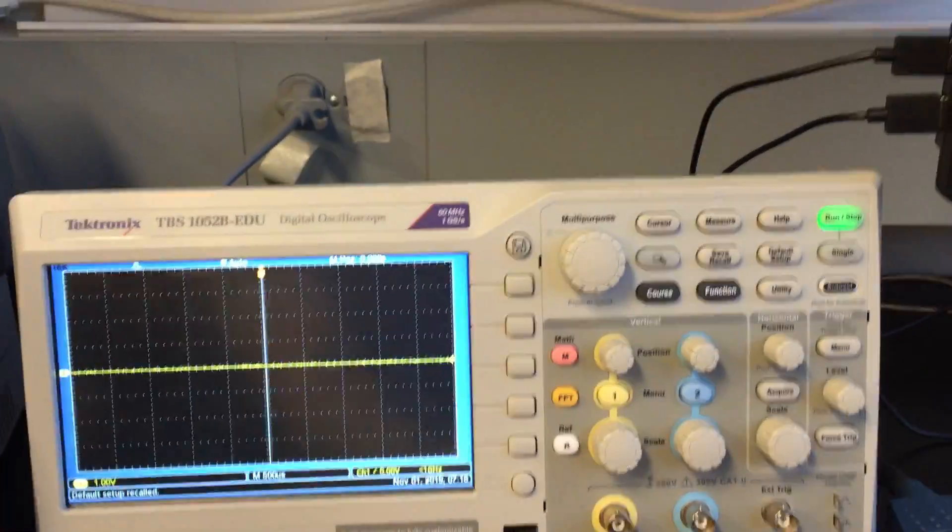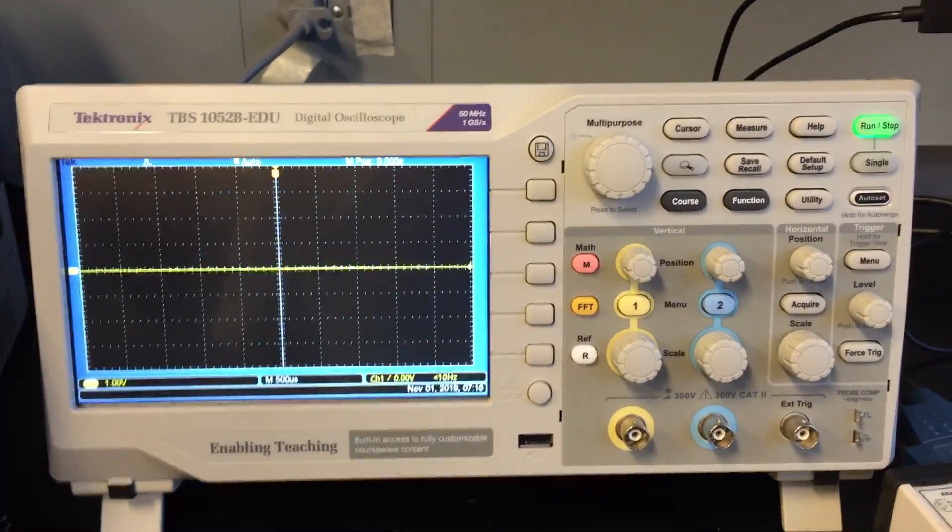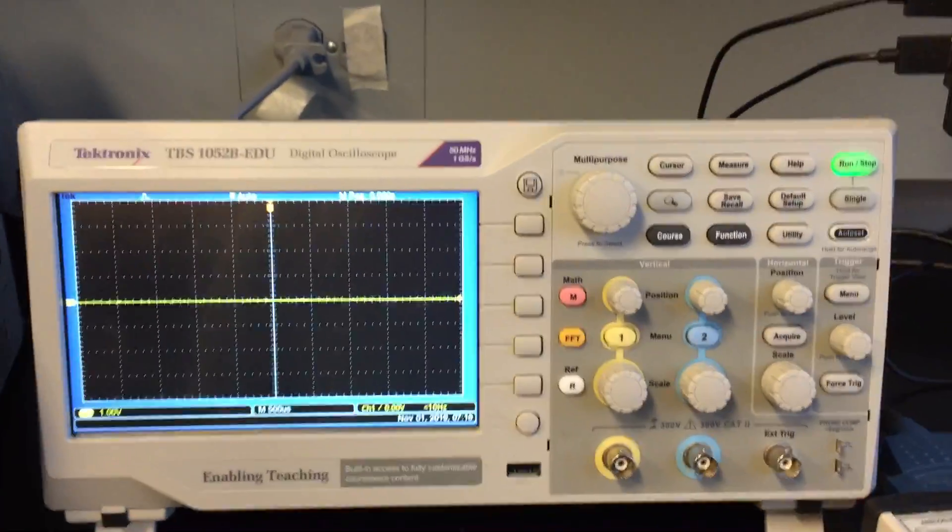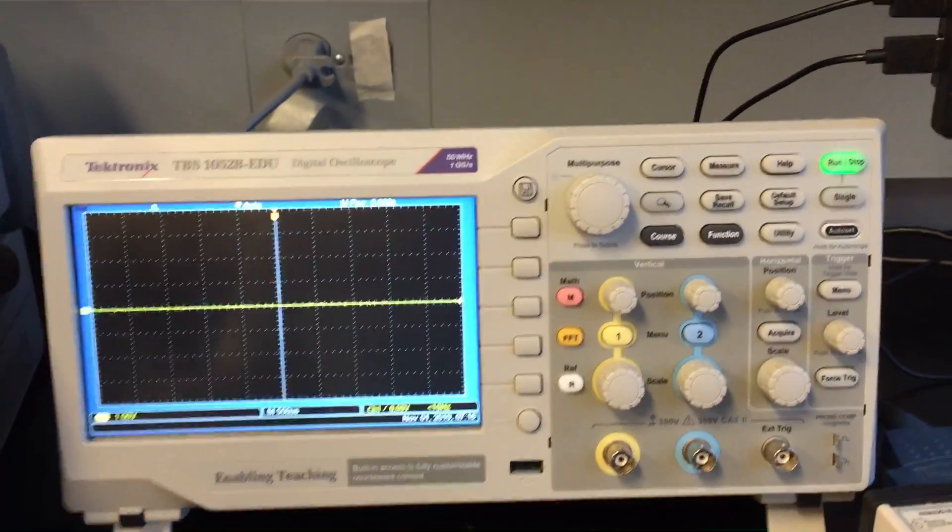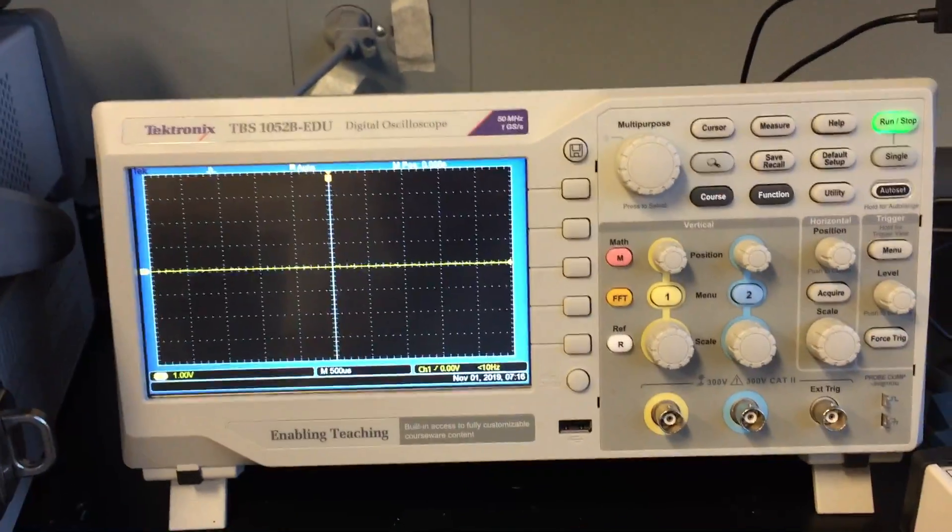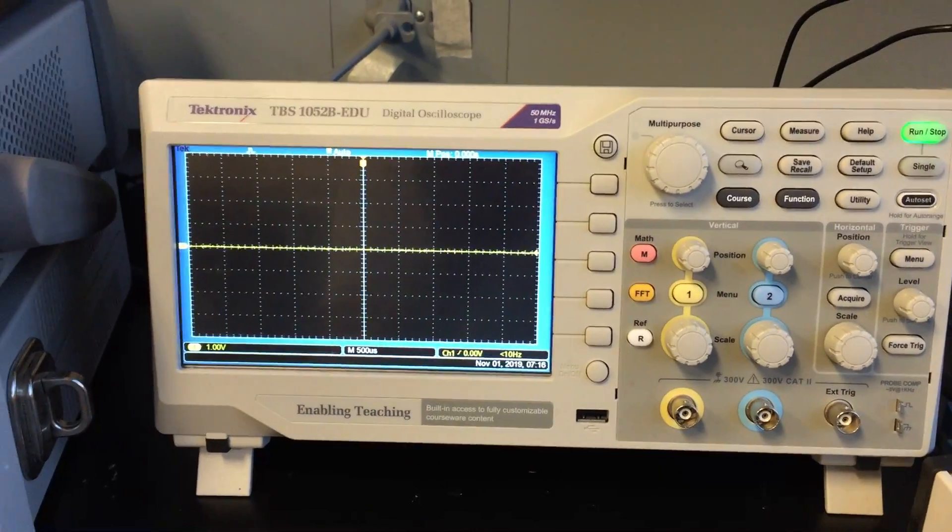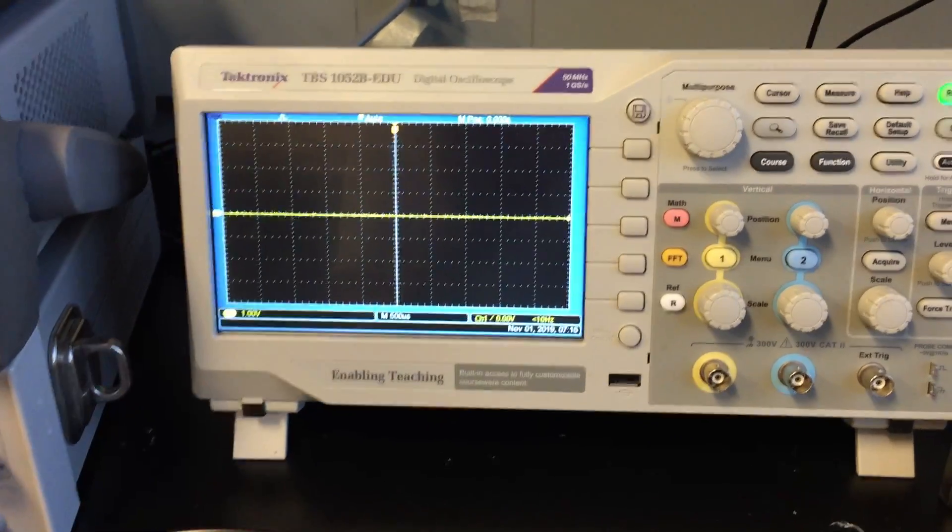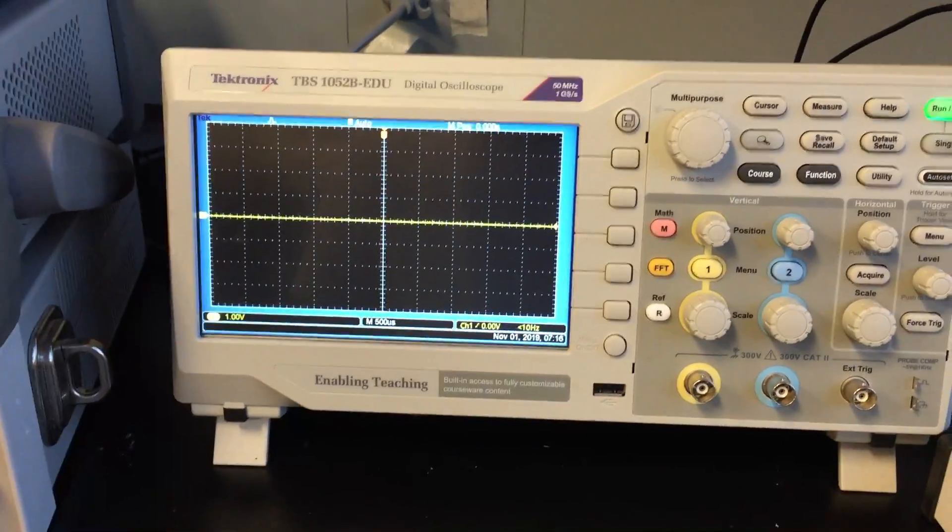And when you do that, that kind of ensures that no odd settings were made. You just don't know who was using it before for what. Maybe they have a weird trigger setup, maybe it's on nanoseconds or AC coupled. So if you bring it back to the default, it's very deterministic. Now, of course, then you have to know what the default settings are.